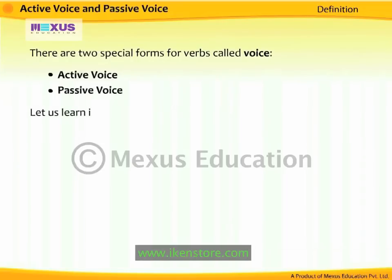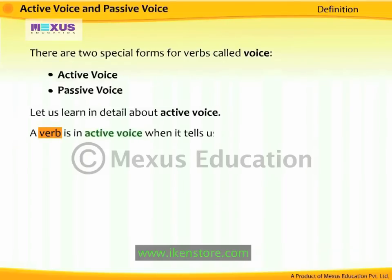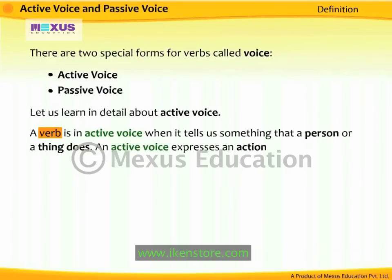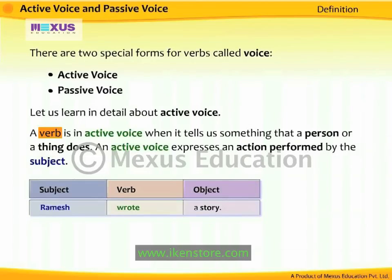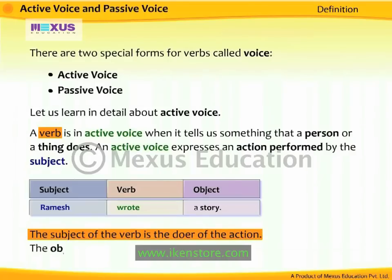A verb is in the active voice when it tells us something that a person or a thing does. An active voice expresses an action performed by the subject. For example, 'Ramesh wrote a story.' The action of writing is performed by the subject, Ramesh. The subject of the verb is the doer of the action, and the object receives the action of the verb.